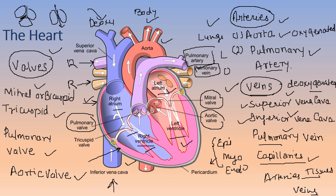The pulmonary artery carries deoxygenated blood to the lungs, where it is oxygenated. The oxygenated blood is then transported back to the heart through the pulmonary veins — through the left and right pulmonary veins — into the left atrium. When the left atrium contracts, it sends the blood to the left ventricle, which pushes it towards the aorta. The left ventricle has a thicker wall because the blood must be supplied to the entire body under higher pressure.